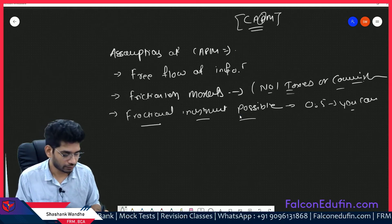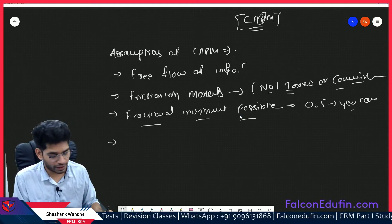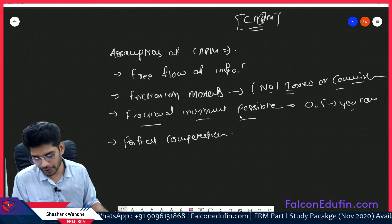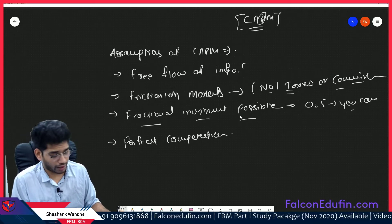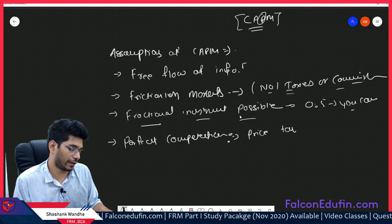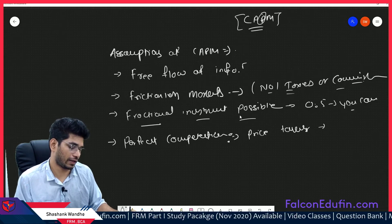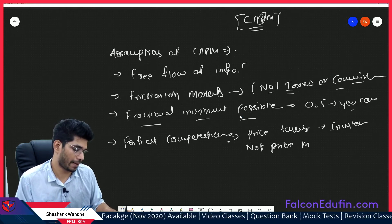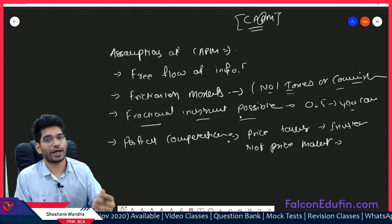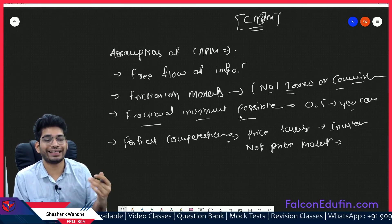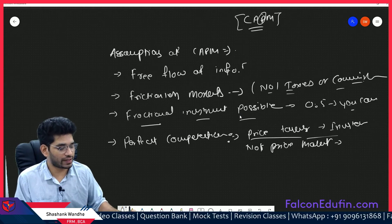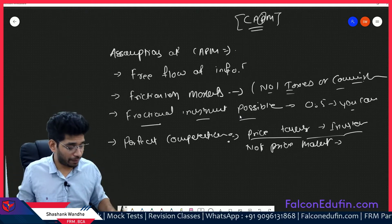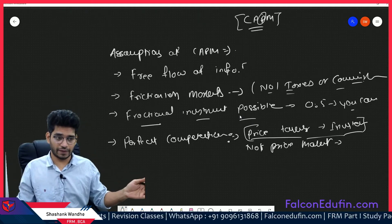The next assumption is perfect competition — meaning investors are price takers, not price makers. That is, you cannot decide or influence the market price; you can only take the price. In formal language: investors are price takers and not price makers.